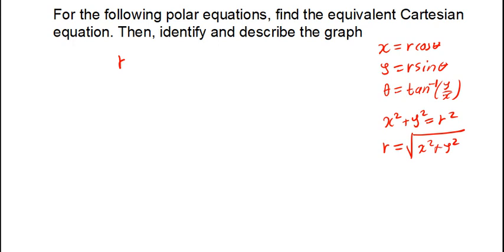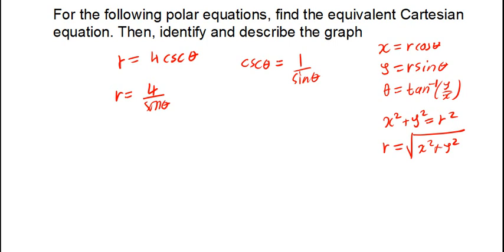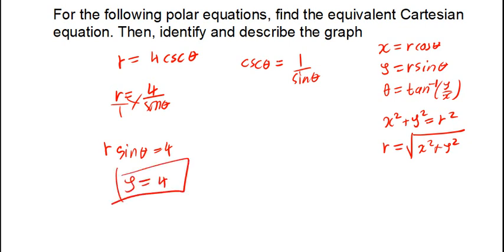Let's look at the first example: r = 4 cscθ. This is a polar equation; let's convert it to Cartesian. Since cscθ = 1/sinθ, we can write this as r = 4/sinθ. Cross-multiplying gives r sinθ = 4. Since r sinθ = y, we get y = 4. This is just a straight line cutting the y-axis at positive 4 — not really difficult to graph.